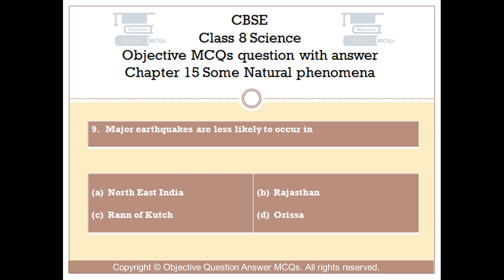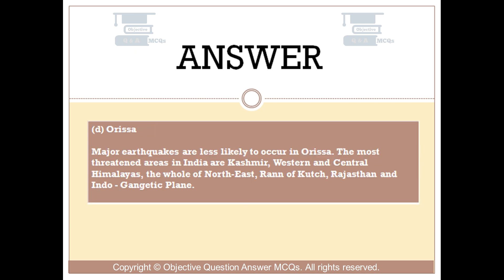The right answer is Option D — Orissa. Major earthquakes are less likely to occur in Orissa. The most threatened areas in India are Kashmir, western and central Himalayas, the whole of northeast, Rann of Kutch, Rajasthan, and the Indo-Gangetic Plain.